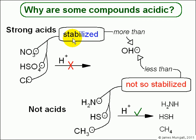So looking at strong acids here, that occurs when we have groups which are stabilised more than the hydroxide ion, whereas if we've got other anions here, which are not so stabilised, H2N, HS, CH3, there's not enough electronegative elements in here, then they will react with H plus, and they are not acids.